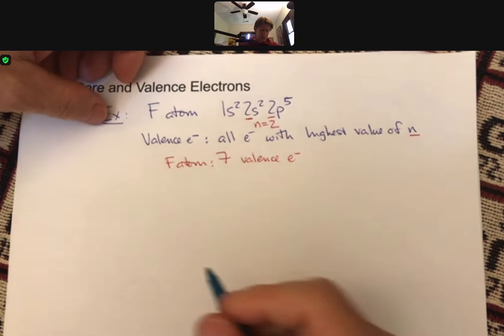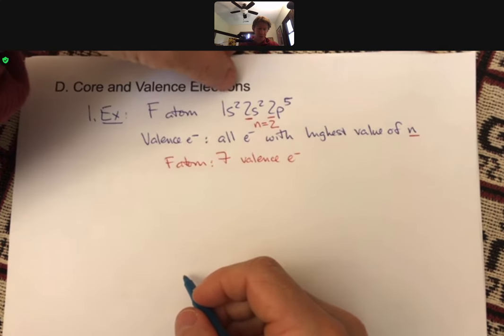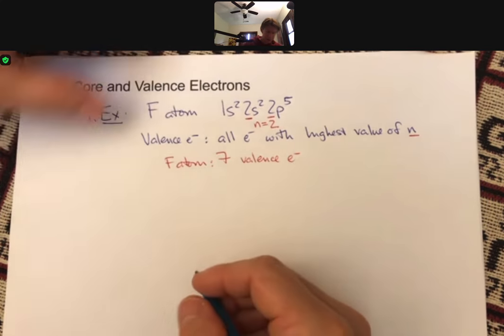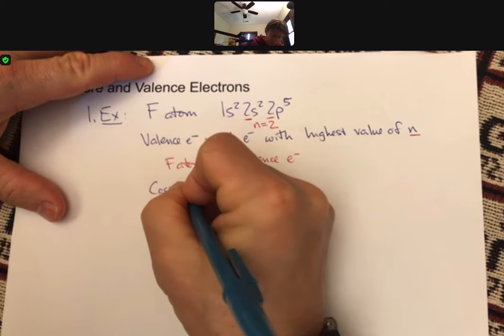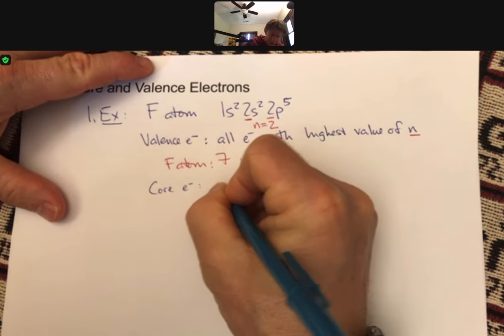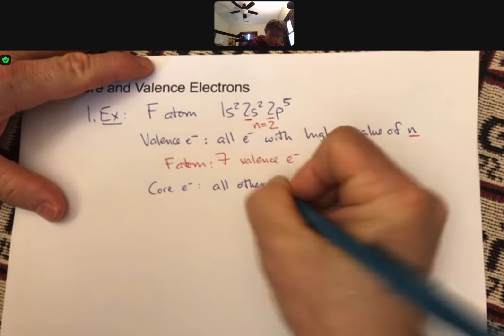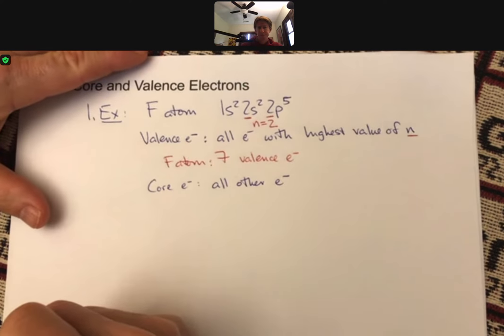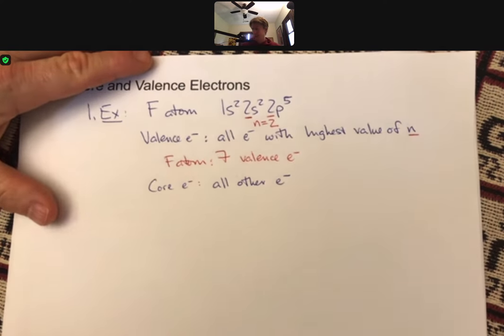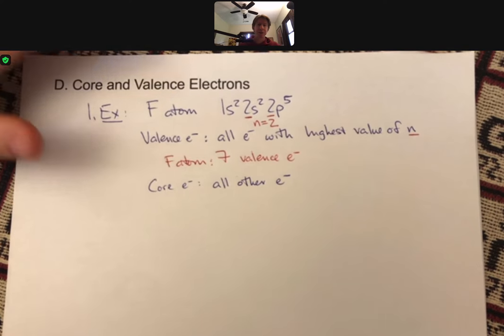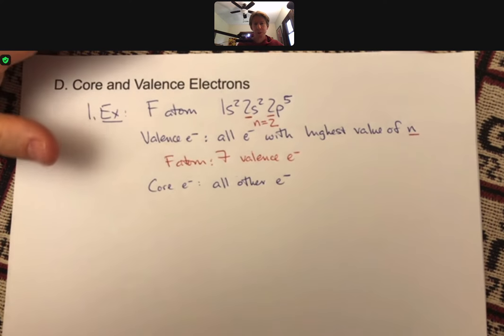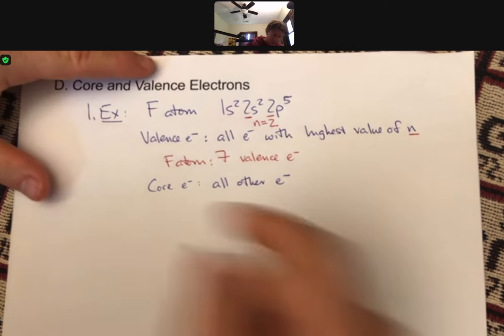And core electrons are going to be all other electrons. So core electrons, all other electrons. We're not too worried about counting them; there are just two core electrons for a fluorine atom. But what about...